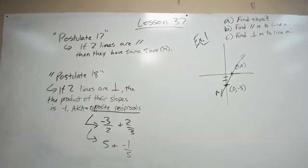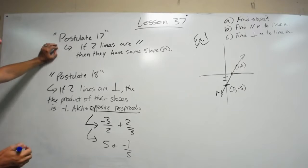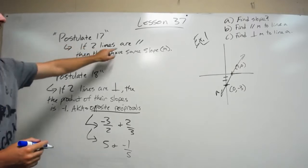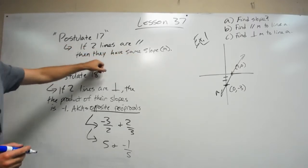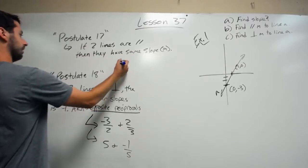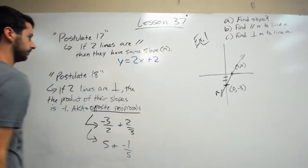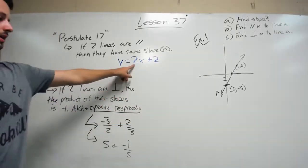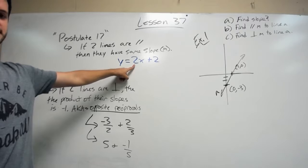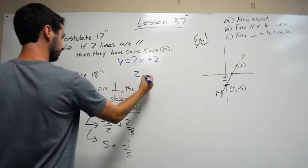We're going to learn about writing equations of parallel and perpendicular lines in lesson 37. We'll start with postulate 17, which states if two lines are parallel, then they have the same slope. So if you have a line of y equals 2x plus 2, the slope is 2. If a line is going to be parallel to this line, it must have a slope of 2.